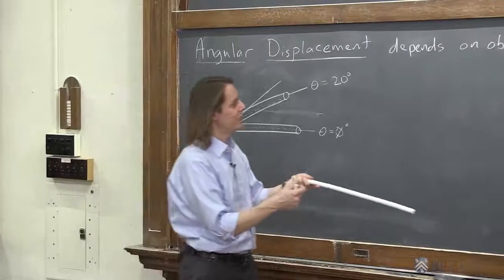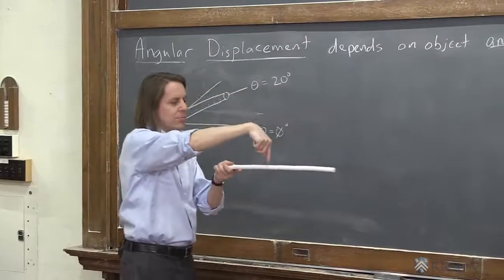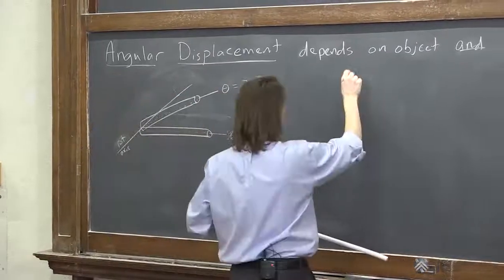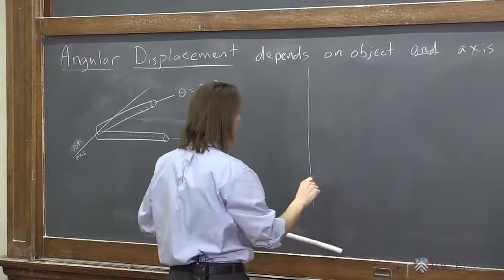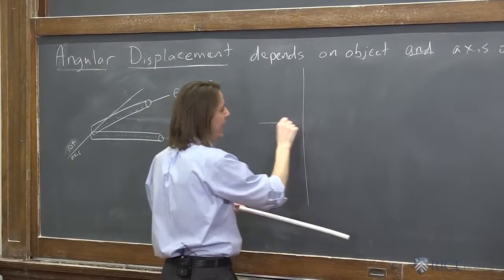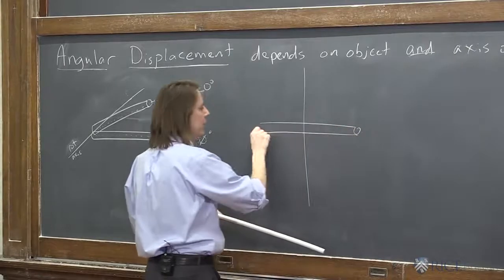We could define another axis. We could do an axis going straight through the middle and rotate like this. All right, so we can draw that real quick. So if the axis is down,